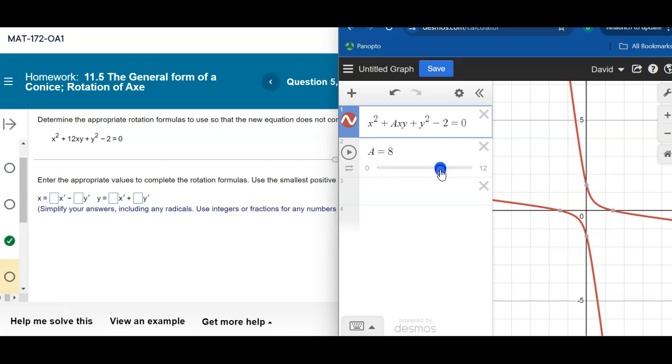So when we have an xy term, it's not as easy, it's not just straightforward. What am I looking at? Is it an ellipse? Is it a hyperbola? It's not just looking at those x squared terms and y squared terms anymore. Now you have to consider that xy term.